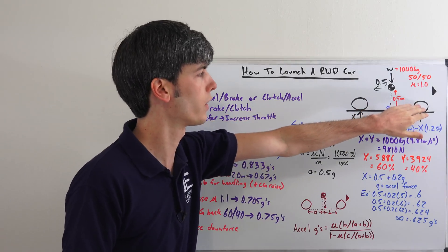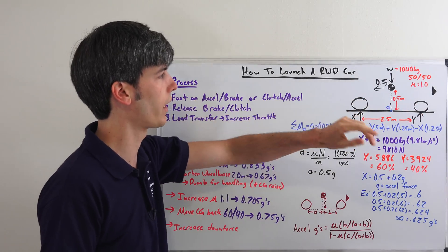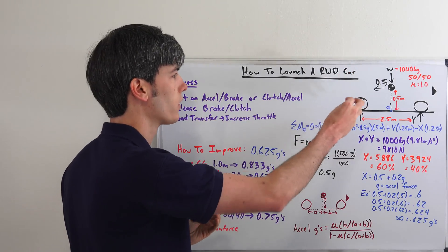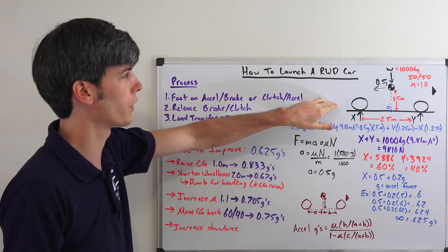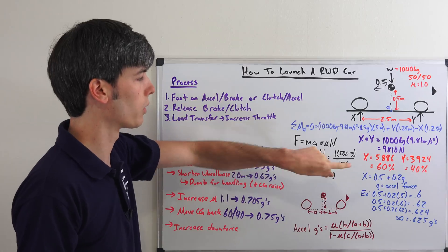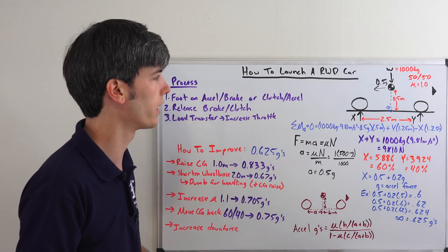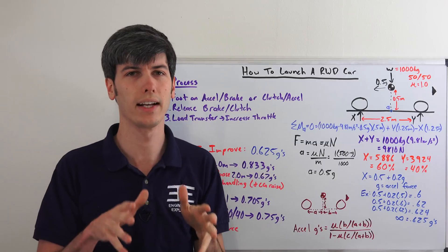And so we've got half the weight on the front axle and half the weight on the rear axle as a result of that 50-50 weight distribution. So if we have half the weight on the rear axle and the coefficient of friction between the tires and the ground is one, you multiply those together and we can accelerate at half a g. That's what I've solved right here. So the vehicle can accelerate at half a g.